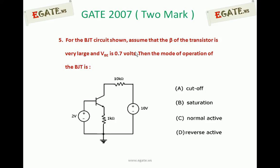For the given BJT circuit, VBE is 0.7 volts and Beta is very large. The base side is supplied with 2 volts and the collector side with 10 volts VCC. Two resistors RC and RE are given: 10 kilo ohms and 1 kilo ohm respectively.